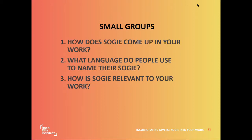SOGI comes up during intake and many virtual meetings — terms like 'straight, female, woman' are heard. Someone noted it has not come up too much in direct care case management for homeless services for their clients. Another participant shared that it usually comes up when individuals feel vocal to speak out on their personal feelings, which can make others feel extremely uncomfortable. It comes up in one-on-one settings, during intake, and also around choosing roommates in shelter for domestic violence and sexual assault services.